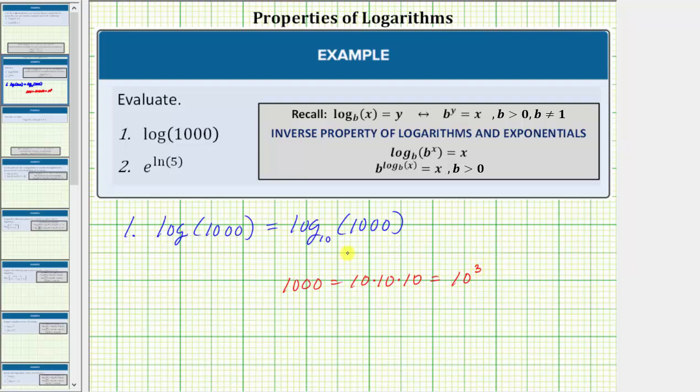This means log base 10 of 1,000 equals log base 10 of 10 cubed, which fits the form of the first property and therefore is equal to 3.